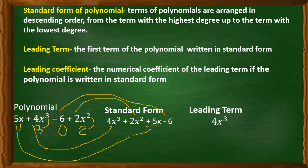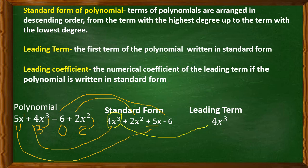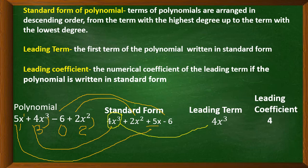Now we determine the leading term. The leading term is the first term in the standard form of the polynomial, which is 4x³. Next, the leading coefficient is the numerical coefficient of the leading term, so the leading coefficient is 4.